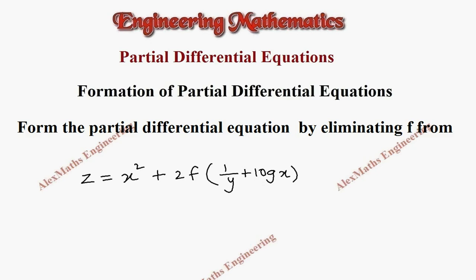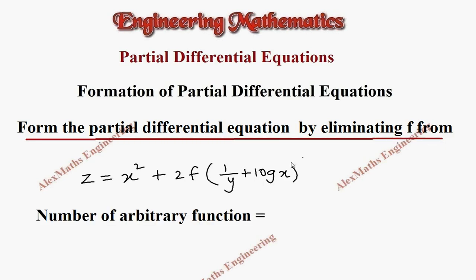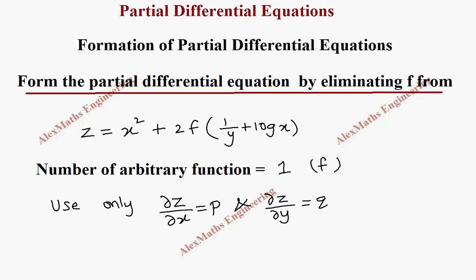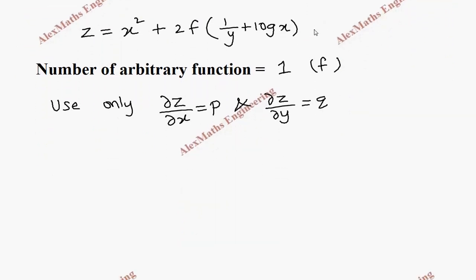Hi students, this is Alex. In this video we are going to form the partial differential equation by eliminating the arbitrary function f. The number of arbitrary functions present in the given expression is 1, that is f. We are going to use the partial derivative with respect to x, named as p, and the partial derivative with respect to y, named as q — only first order derivatives. Let's take this as the first expression.